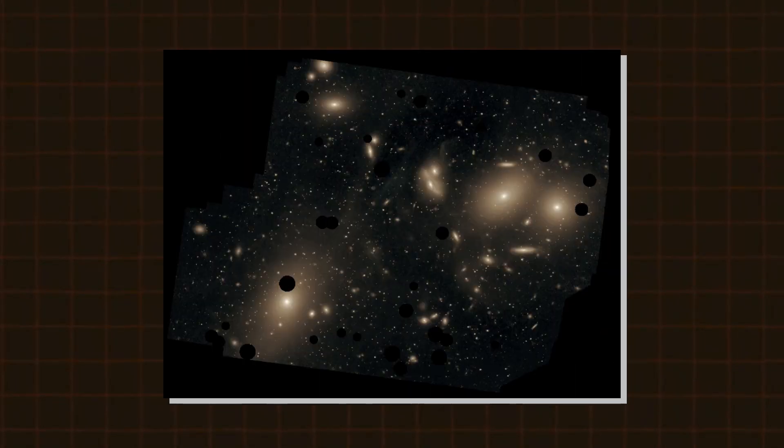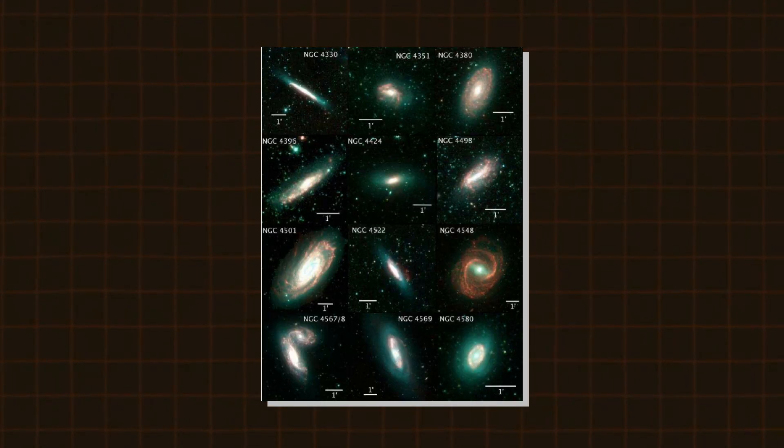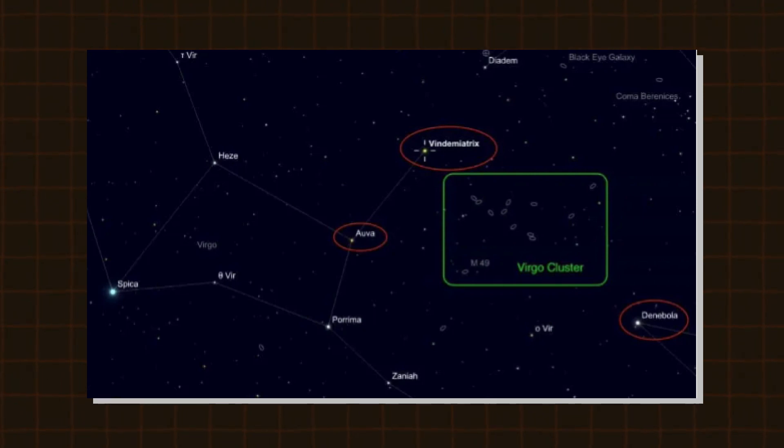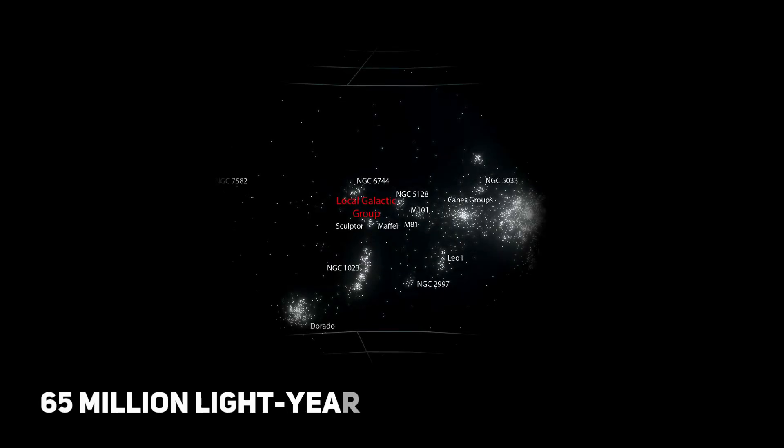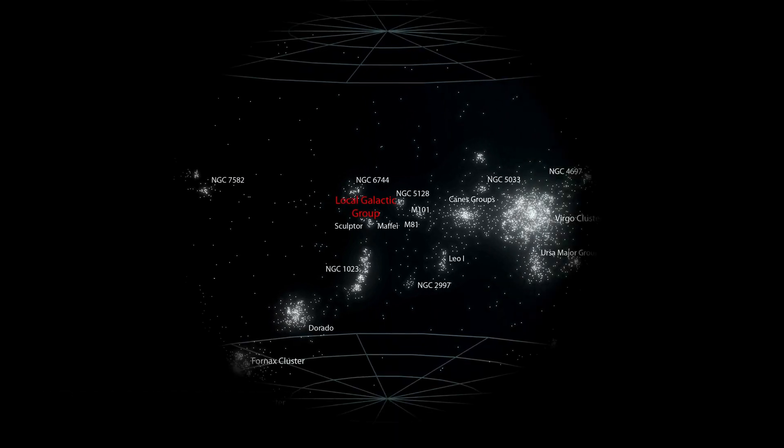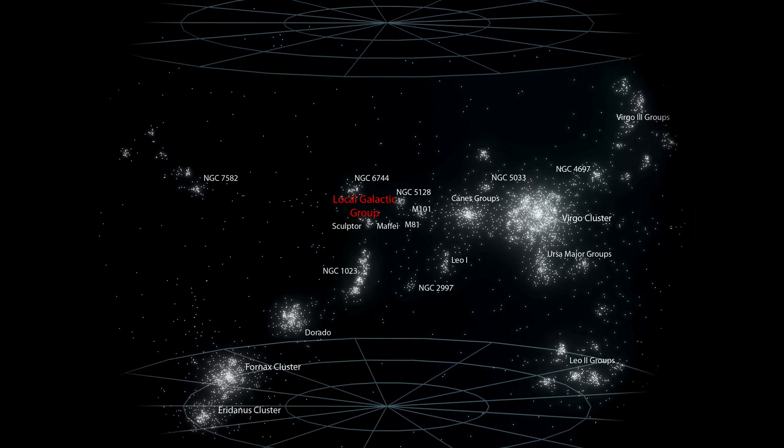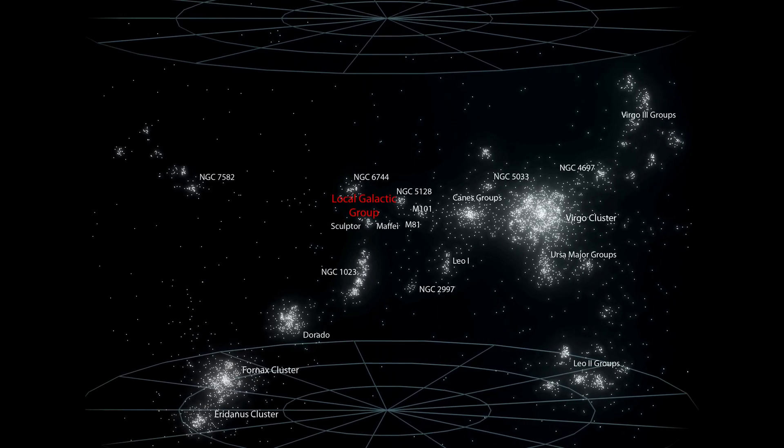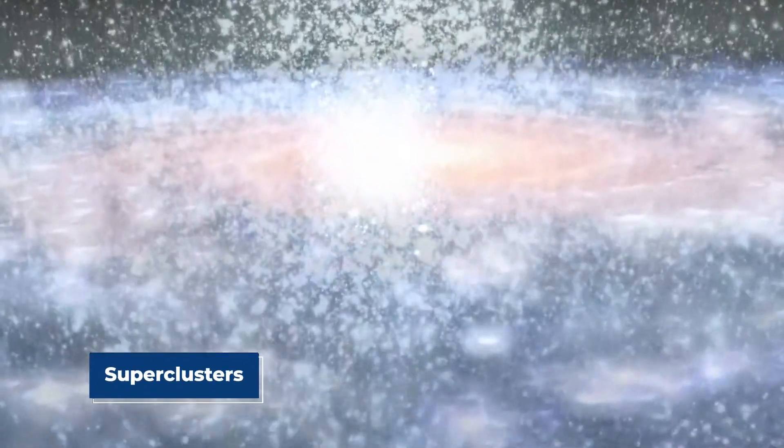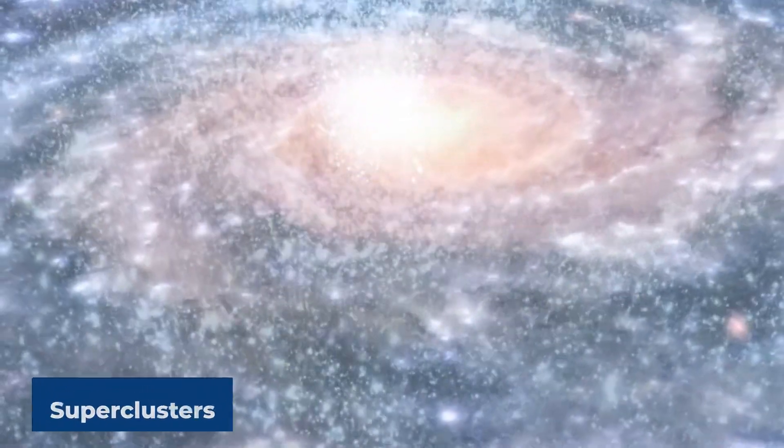The next big thing is the Virgo Cluster, which can be described as more than 1,300 galaxies packed into a dense clump. The cluster lies about 65 million light-years away and is gravitationally bound, meaning that its member galaxies tend to hang out close to each other and are tied up by their mutual gravity. As you go beyond them, you encounter superclusters, which are enormous collections of galaxies.